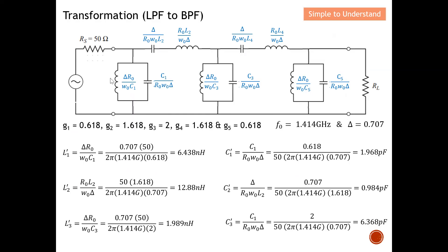For L1: the formula uses fractional bandwidth = 0.707, R0 = 50 Ω, ω0 = 2πf0 where f0 = 1.414 GHz, and the prototype value g1 = 0.618. Plugging into the calculator gives L1 = 6.438 nH. For C1: using the same g1 = 0.618, R0 = 50 Ω, ω0 = 2π × 1.414 GHz, and fractional bandwidth = 0.707, we get C1 = 1.968 pF.